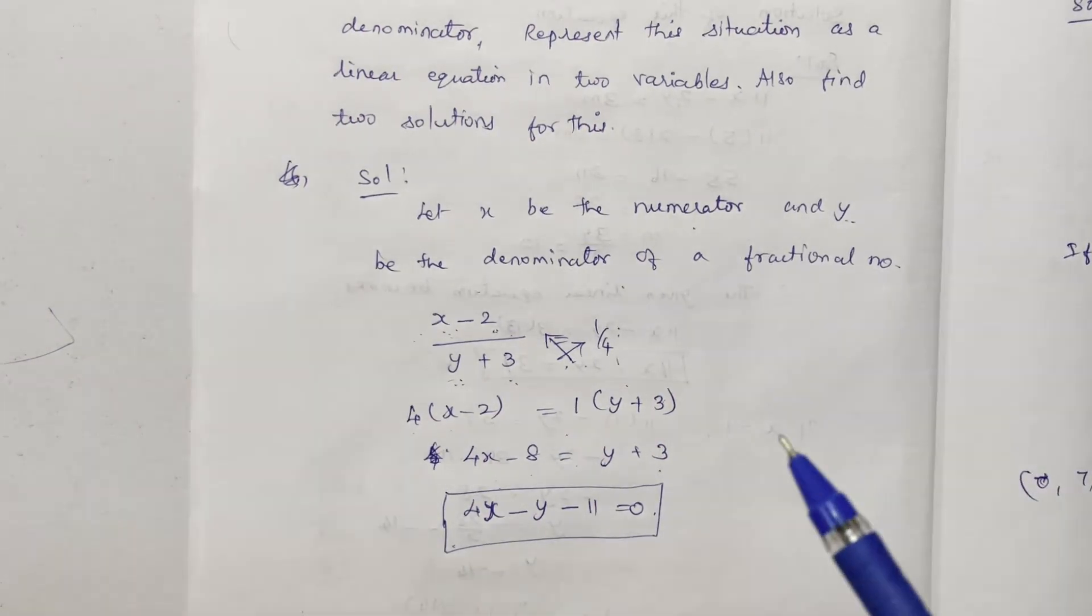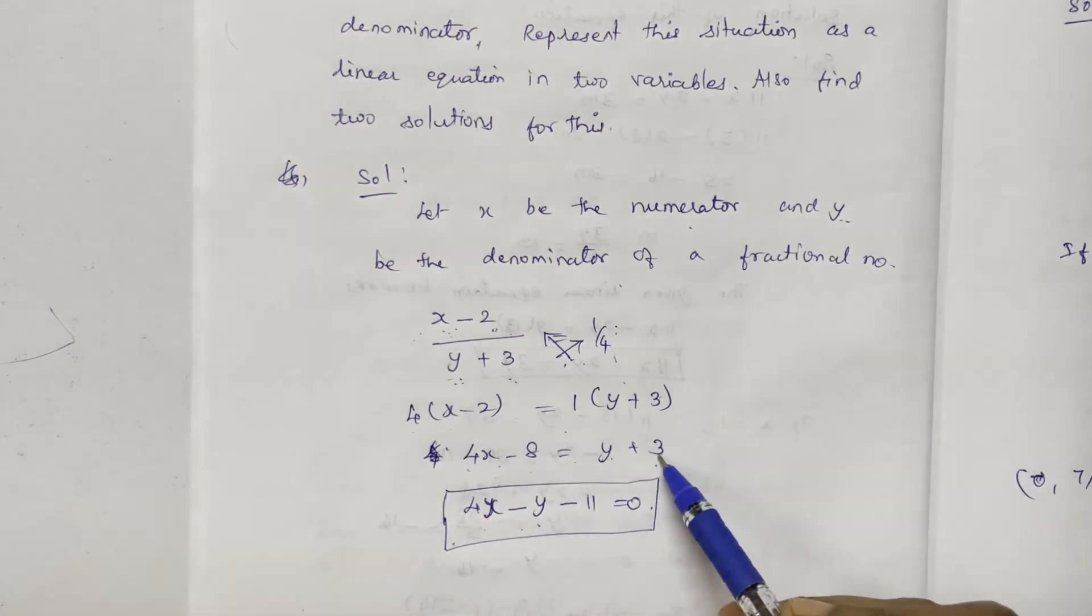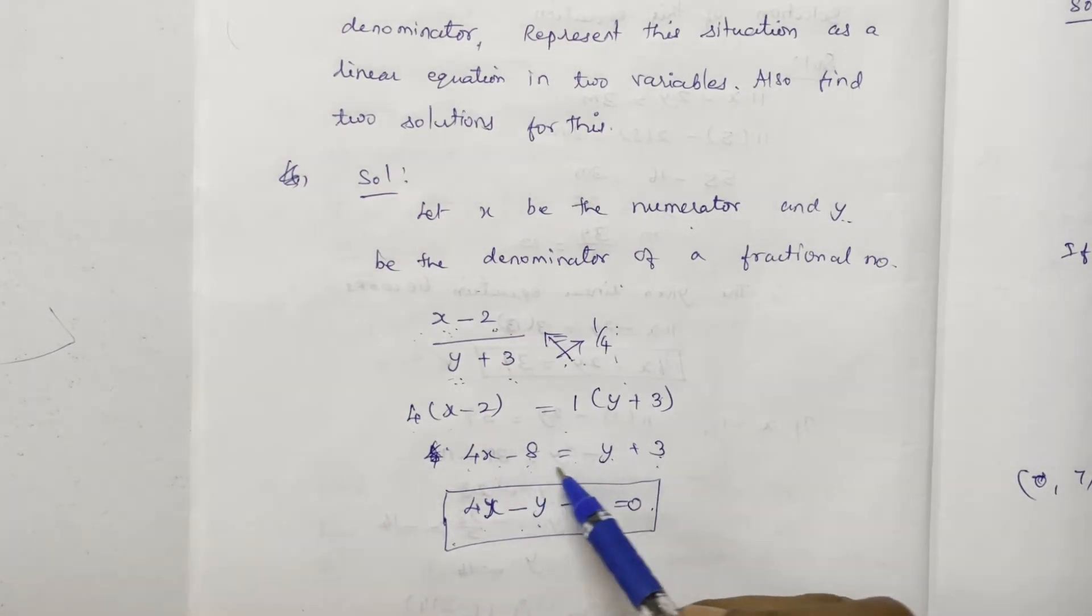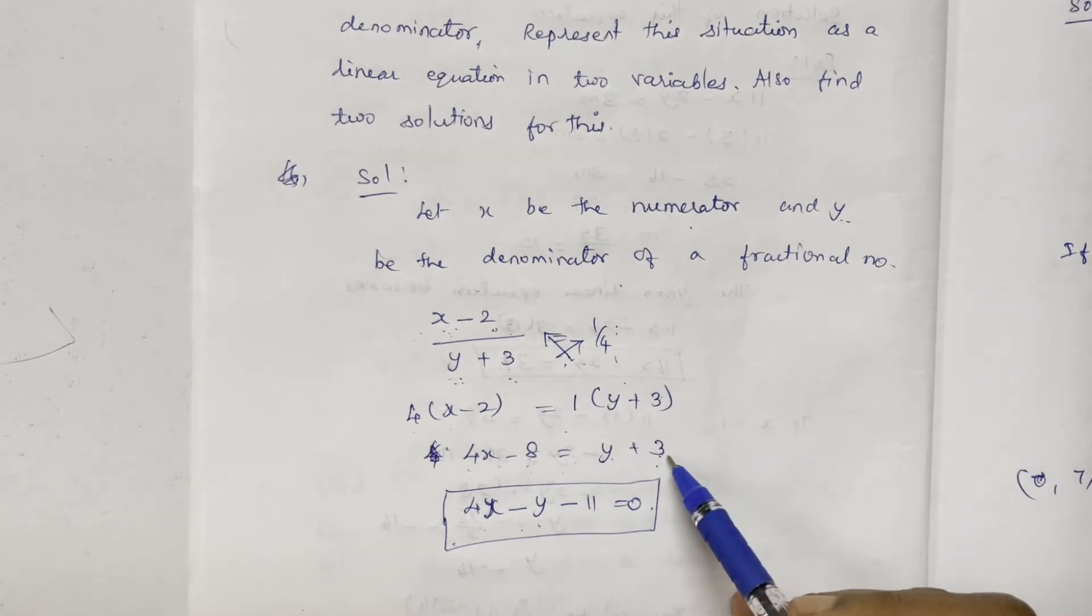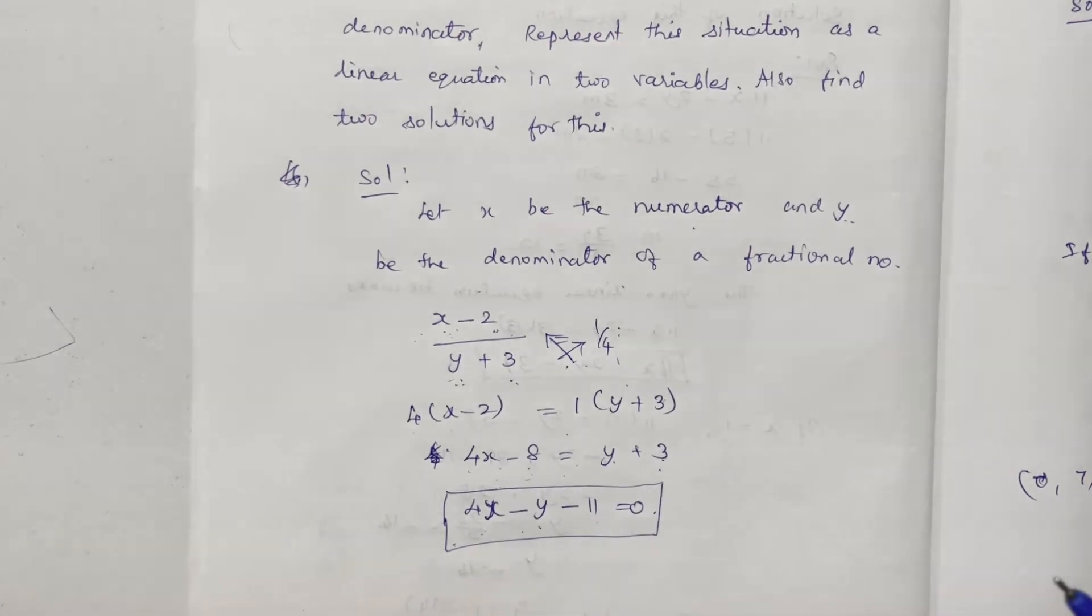Linear equation form. How to do ax plus by plus c equal to 0? So that form is 4x minus y minus 8 minus 3. Add to the minus 11. So 4x minus y minus 11 equal to 0.